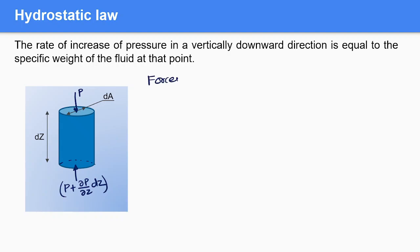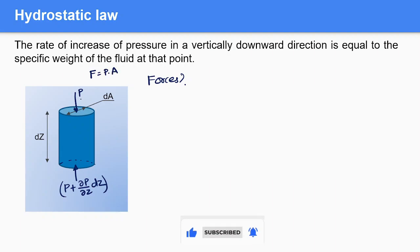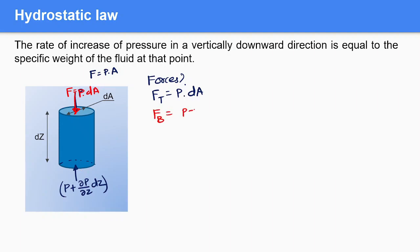We know that pressure equals force per area, so force equals pressure times area. The force on the top side is p·dA. The force on the bottom side is (p + (∂p/∂z)·dz)·dA. These are the pressure forces acting on the fluid element.